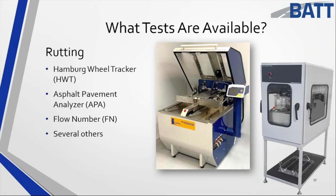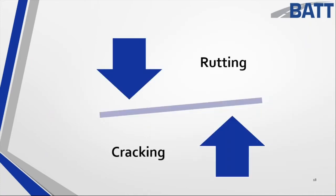Rutting is rarely seen now — cracking is the number one issue. But as we move towards balanced mix design, I've heard rutting creeping back up. Can we design a mixture without swinging that pendulum back and forth between cracking and rutting? Absolutely — but we've got to think outside the box of just trying to do things with asphalt and aggregate. That's where modifiers come in, and a product like ASXP aramid fiber is one of those, because it is a polymer fiber.